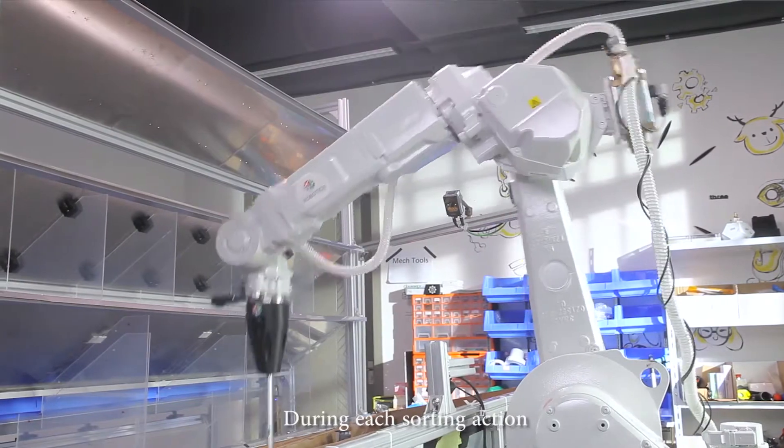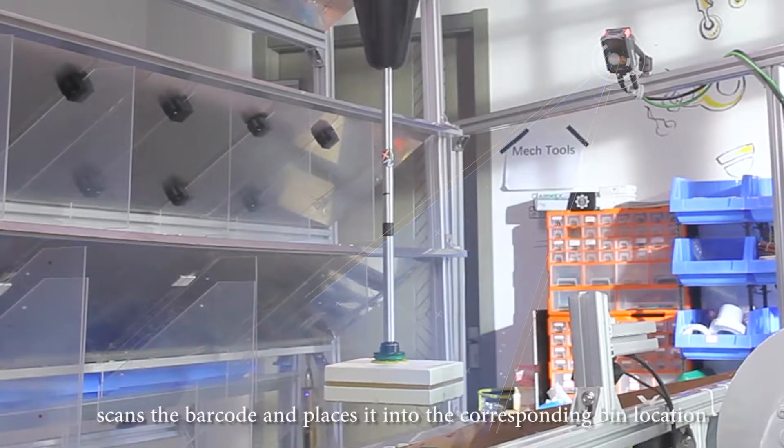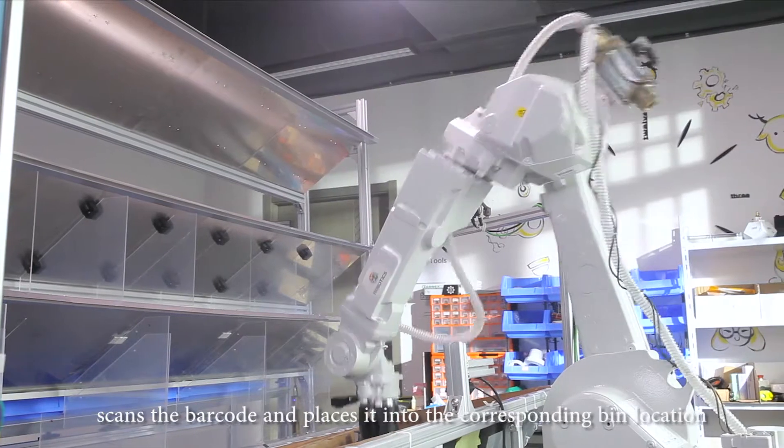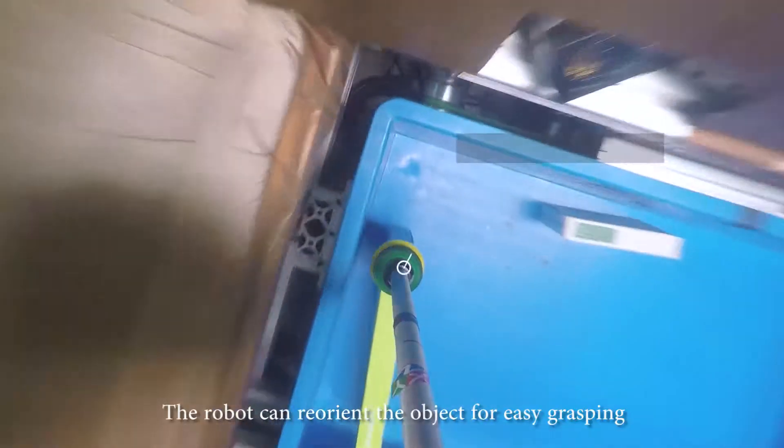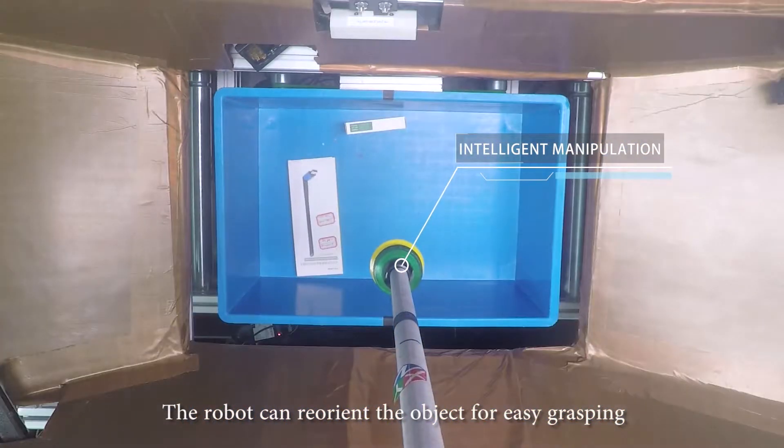During each sorting action, the robot picks up an object, scans the barcode, and places it into the corresponding bin location. The robot can reorient the object for easy grasping.